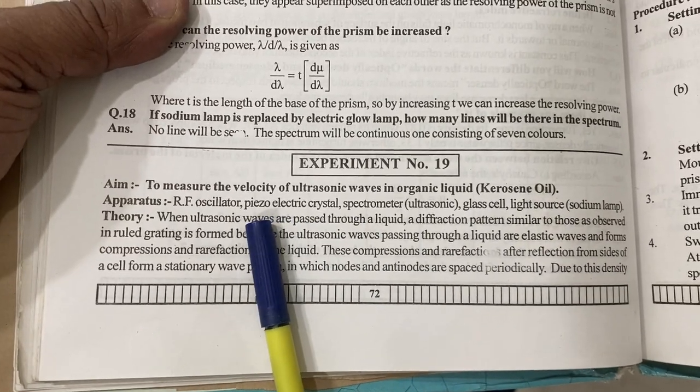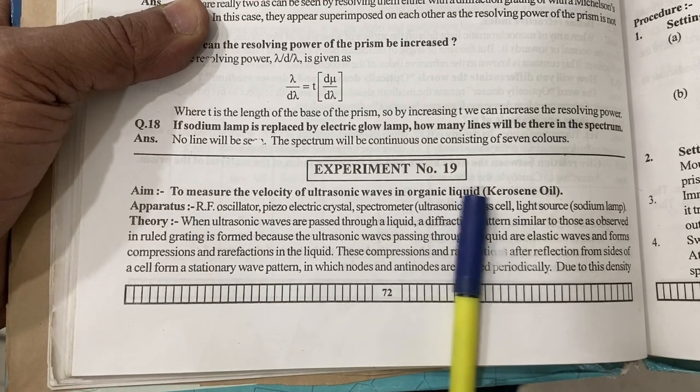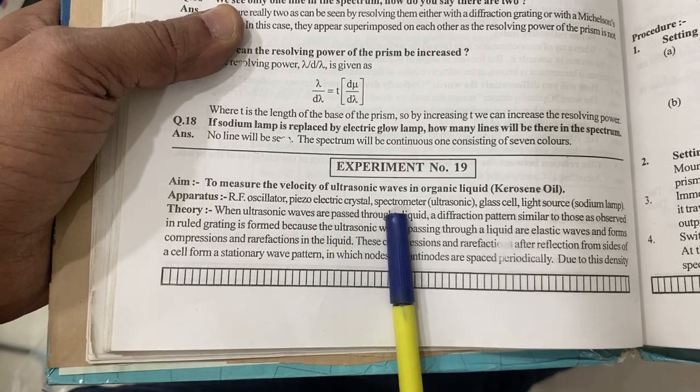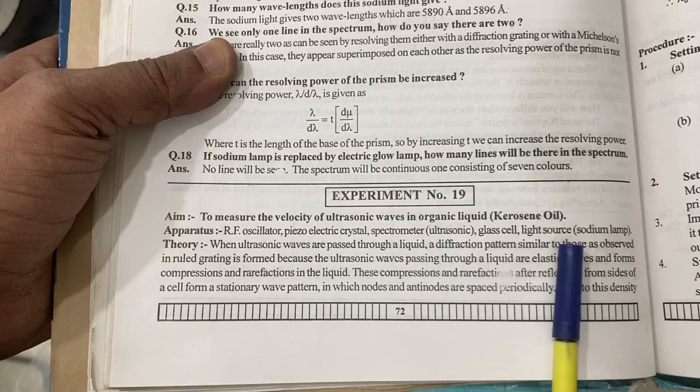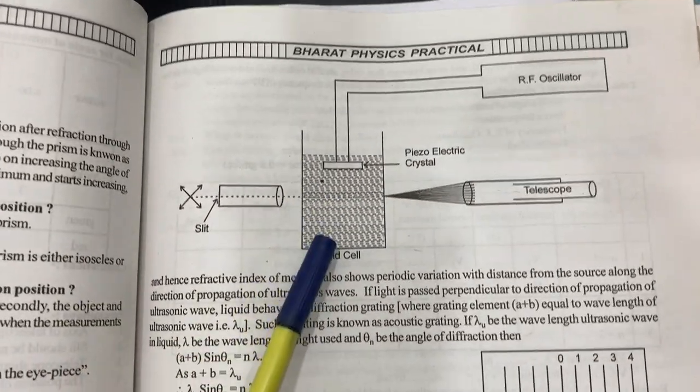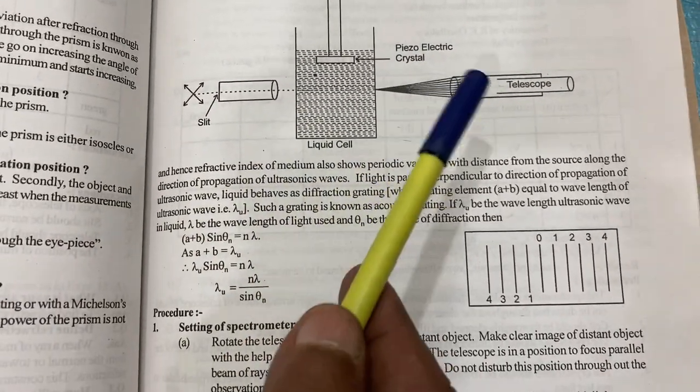We have small packings available: RF oscillator, piezoelectric crystal, spectrometer, ultrasonic glass cell, and light sources. All experiments are available. This is shown in vertical; however, our experimental setup will show in horizontal position.